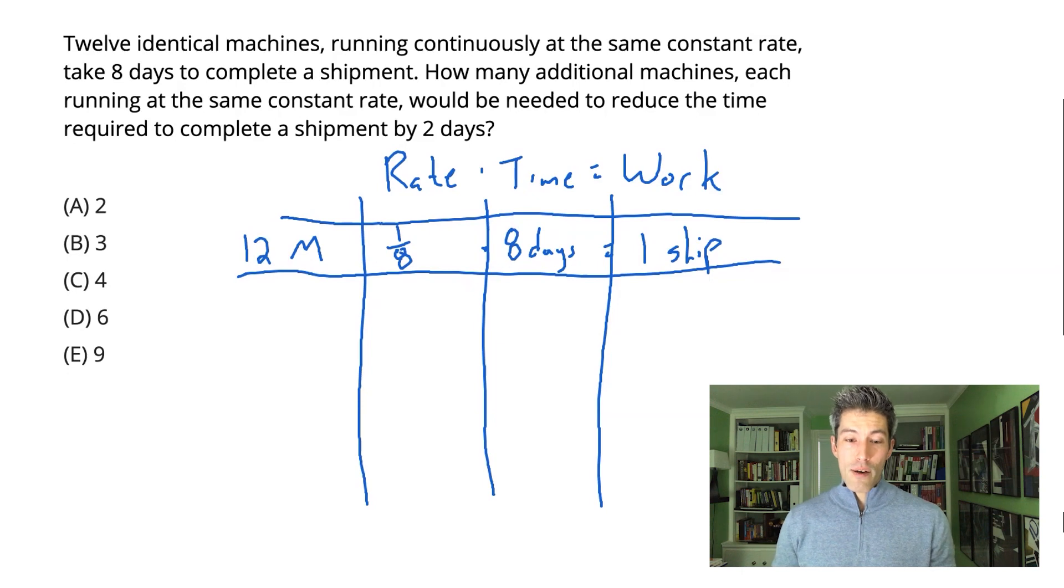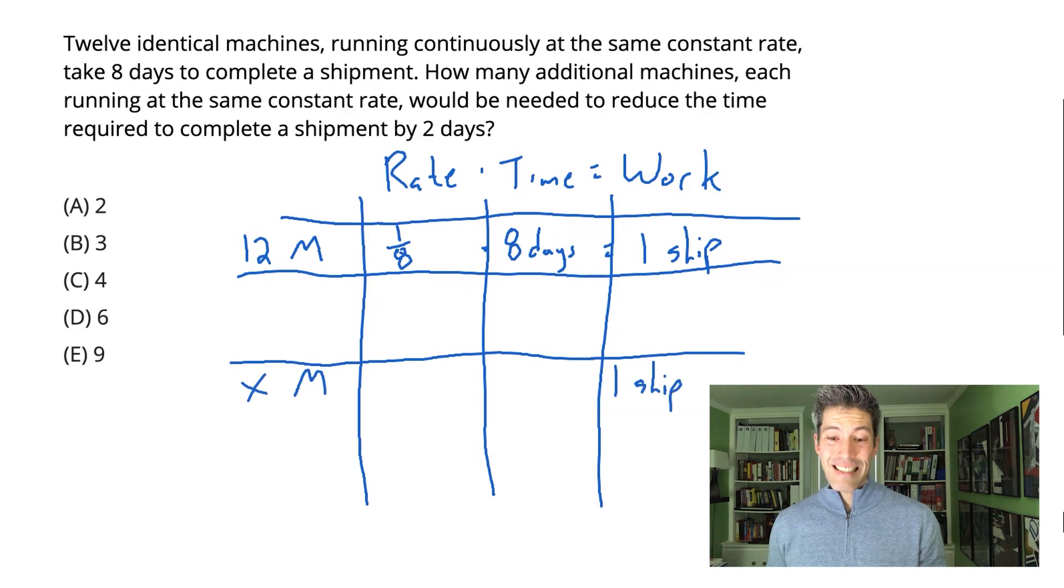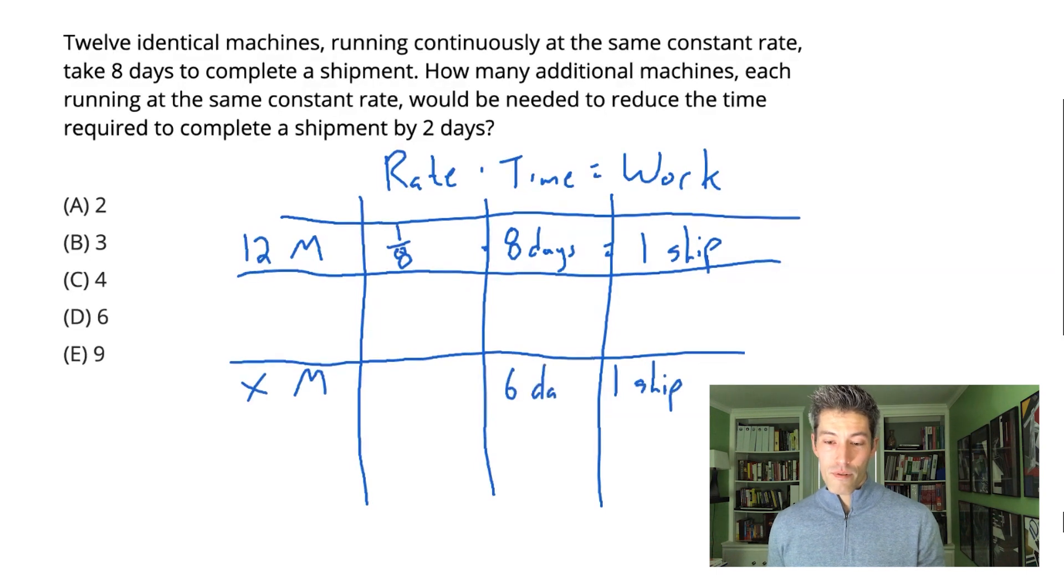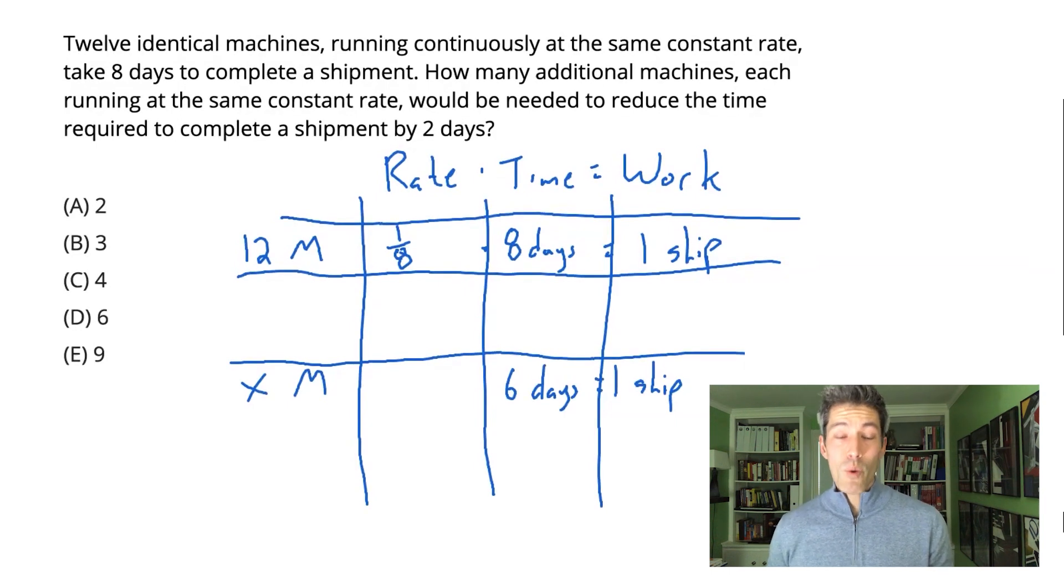Now, what I'm going to have to do here is figure out how many machines it's going to take to do this whole job of one shipment in six days. I know to get the shipment done in six days, I have to work faster, right? So we know we're going to need more machines. How much faster are we going to have to work? Well, something times six days equals one shipment. We can now solve that the rate of all of these machines will need to be one-sixth. One-sixth of the shipment is done each day.